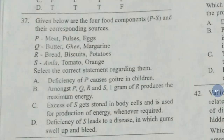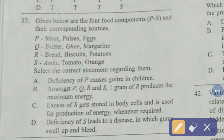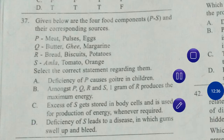Question number 37. Given below are four food components P to S and their corresponding sources. P: meat, pulses, eggs. Q: butter, ghee, margarine. R: bread, biscuits, potatoes. S: amla, tomato, and orange. Select the correct statement regarding them. The correct answer is option number D — deficiency of S leads to a disease in which gums swell up and bleed.